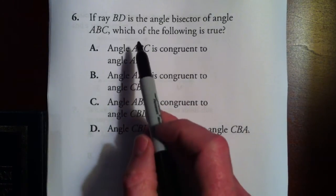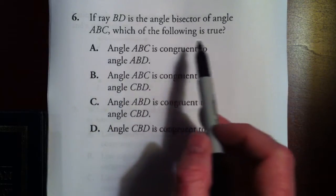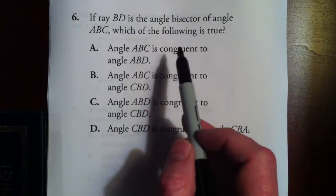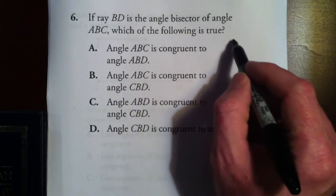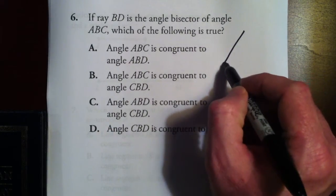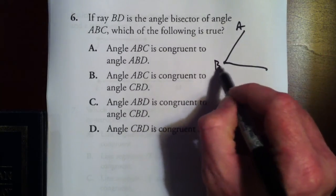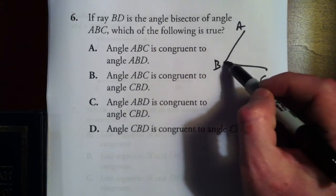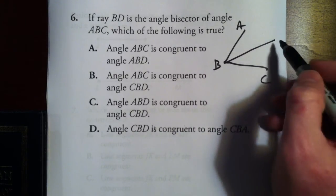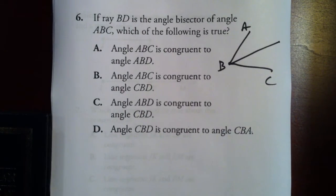If ray BC is the angle bisector of angle ABC, which of the following is true? Let's draw a picture: we've got angle ABC with ray BD as the bisector. Draw yourselves a picture — there's no shame in doing that, and I expect that on the test.